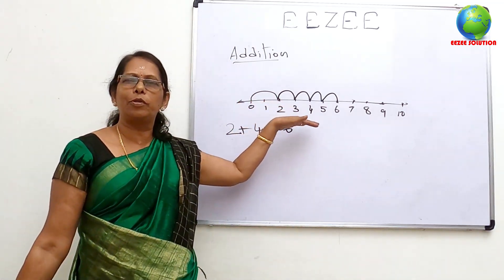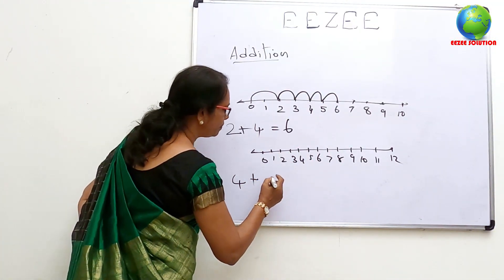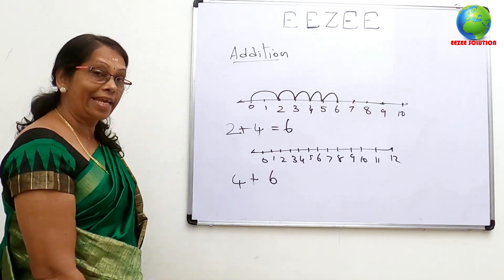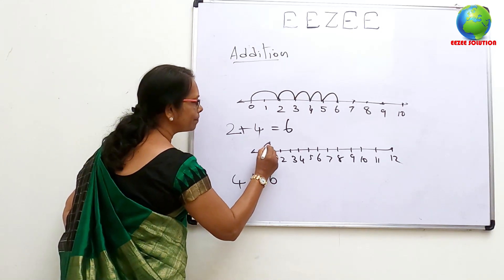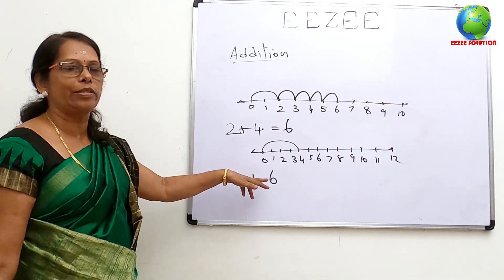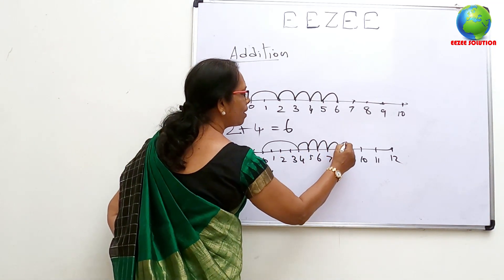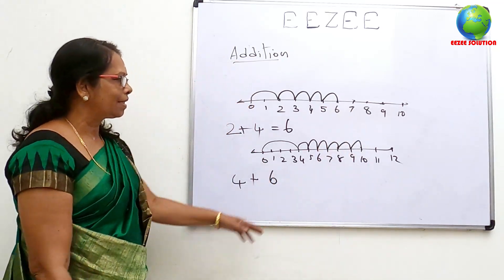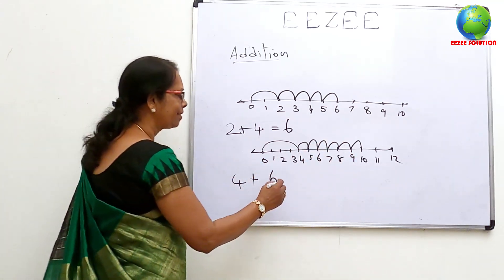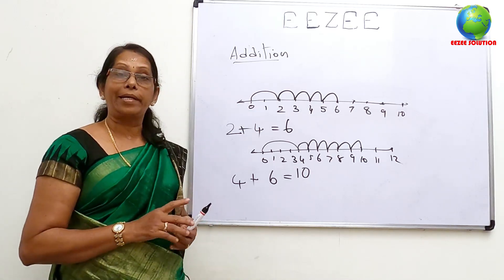2 plus 4 is 6. If you put this number, it's 4 plus 6. 4 plus 6. 4 plus 6 — 1, 2, 3, 4, 5, 6. 4 plus 6 is 10. It's a very easy method.